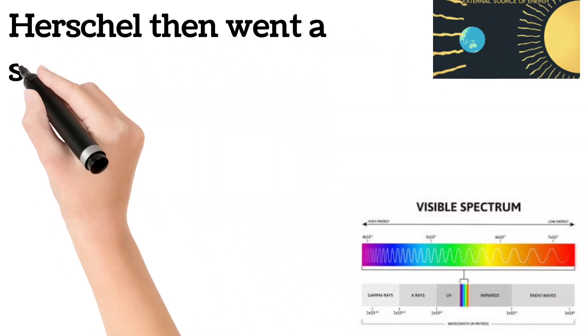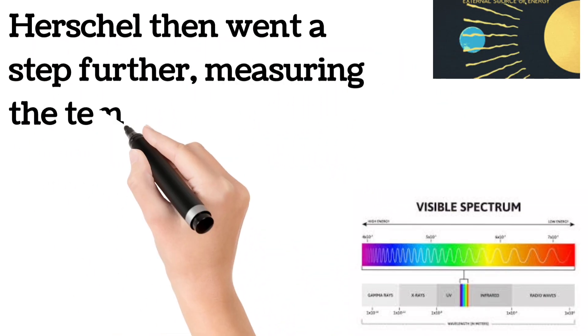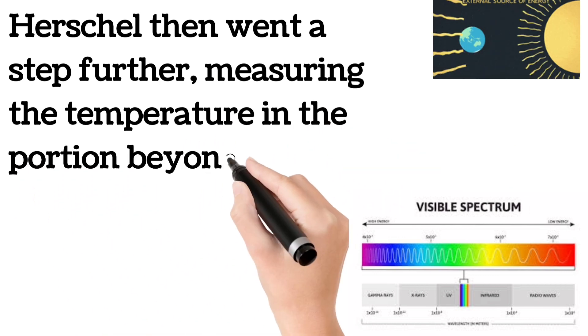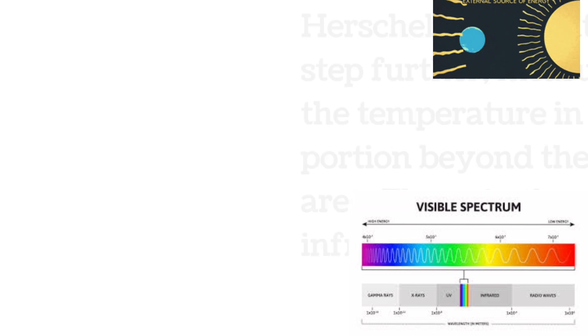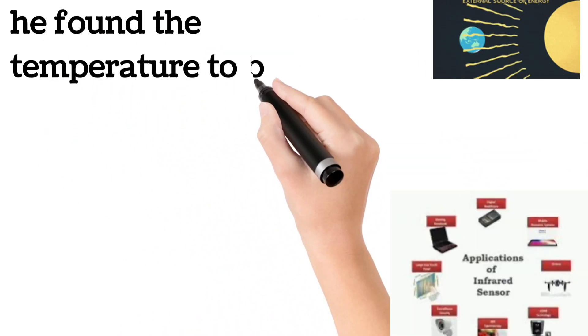Herschel then went a step further, measuring the temperature in the portion beyond the red area. There, in the infrared area, he found the temperature to be the highest of all.